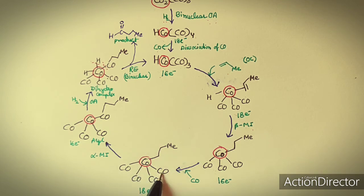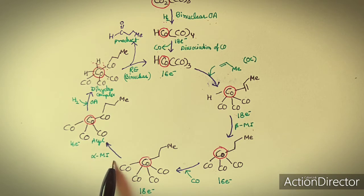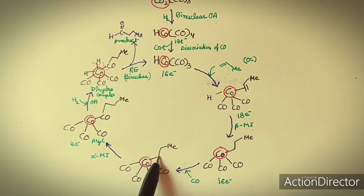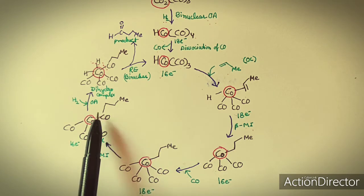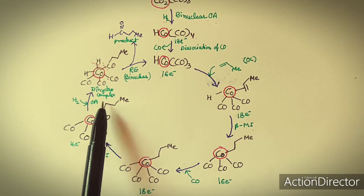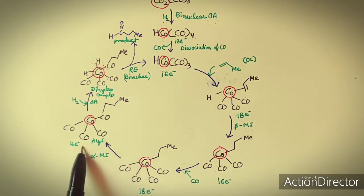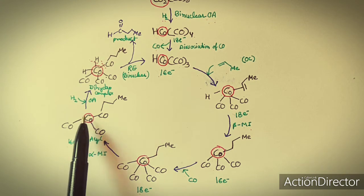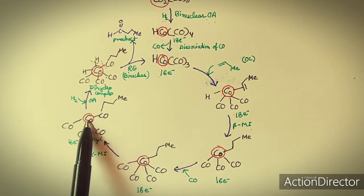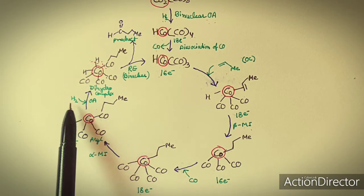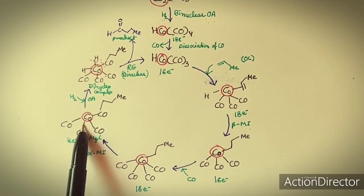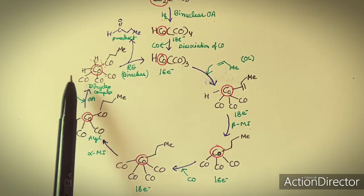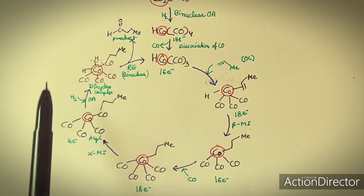Again, the complex has a carbonyl and an alkyl group, so alpha migratory insertion will take place. The carbonyl migrates to the alpha position of the alkyl group. After this insertion, the complex again becomes a 16-electron system with coordination number 4, leaving a vacant site where H₂ can oxidatively add.